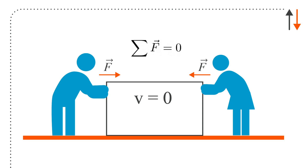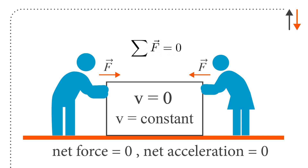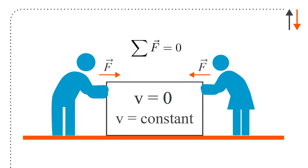However, the block can have a constant velocity, in which case that's the same thing — the block is still undergoing zero net force and zero net acceleration. This is what you covered in SIEM-100, where you had a lot of problems looking at things in static equilibrium.